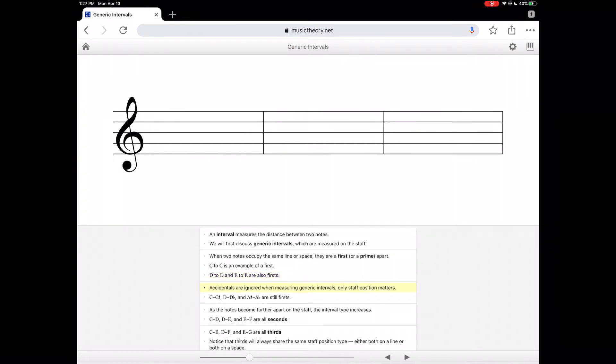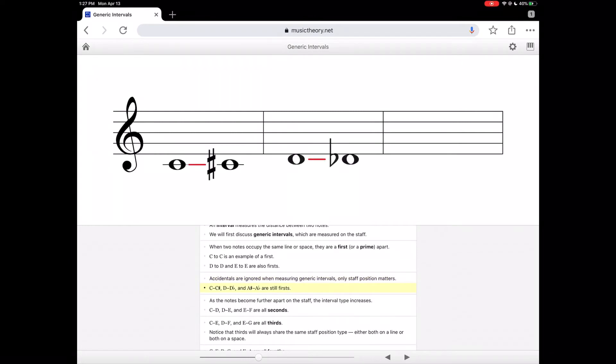Accidentals are ignored when measuring generic intervals. We'll get to specific intervals later. Only staff position matters. C to C sharp, for example, D to D flat, and A sharp to A flat are all still firsts, even though they sound like different notes.